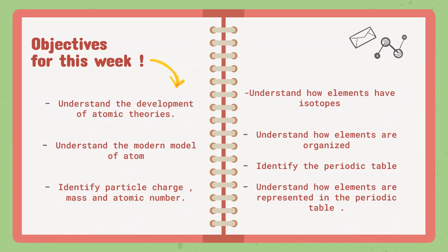As for this week's objectives, we are going to understand the development of atomic theories. We already started with this last week — we saw the different models created by different scientists, what they discovered, and how they built different models until today. We are going to understand the modern model of the atom and compare it with previous models to see what was discovered through them.